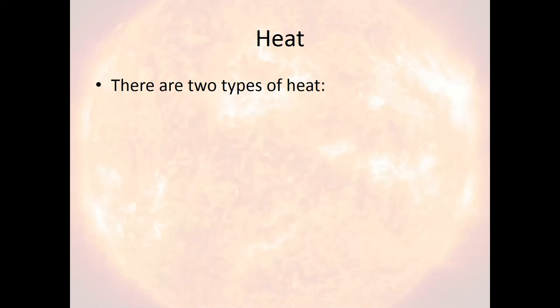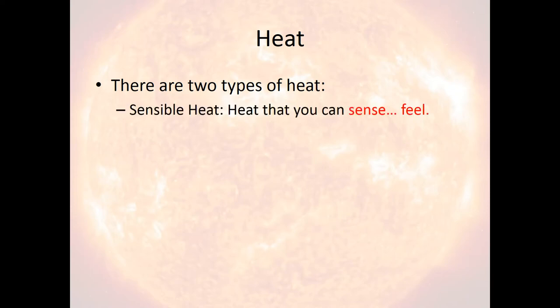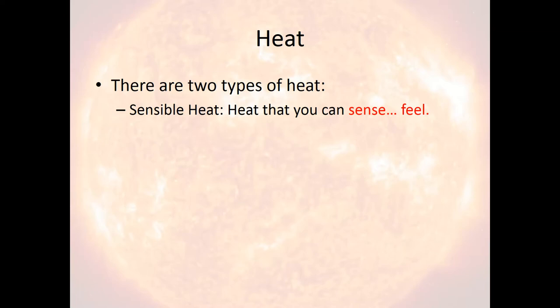There are two types of heat. The type we're going to talk about today is called sensible heat — this is heat that you can actually feel. When you put your hand on something and your hand feels cold, that's because heat is escaping your hand and going to the cooler object. On the other hand, if you touch something hot, like a pan just pulled out of an oven, you're going to feel heat transfer from the pan to your hand. That's sensible heat.